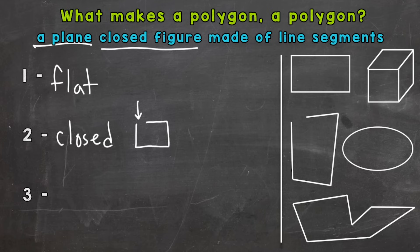Lastly, made of line segments. This means that there cannot be any rounded edges. For example, a counter example: a circle is not a polygon. Yes, it's flat, yes it's closed, but it's not made of line segments. A polygon has to have a check next to each of these three things, so not a polygon.